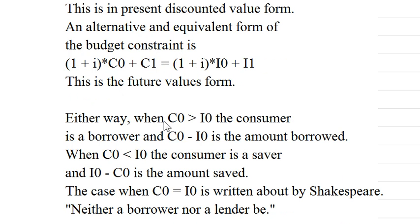Either way, when consumption in the current period exceeds income, the consumer is a borrower and the difference is the amount borrowed. When consumption is less than income, the consumer is a saver and the difference is the amount saved.